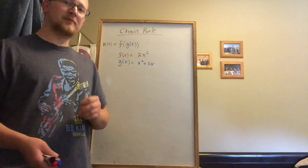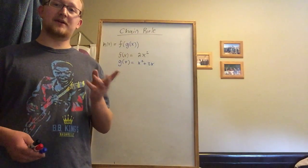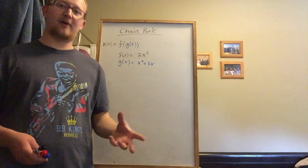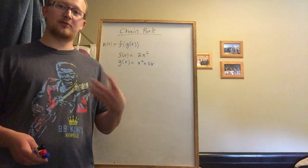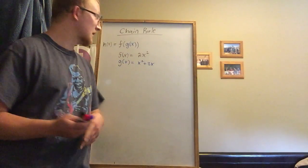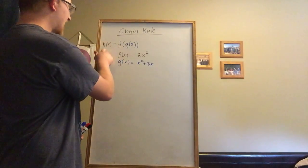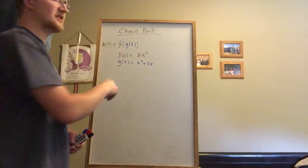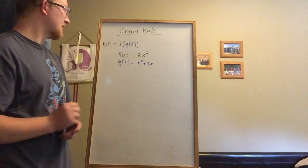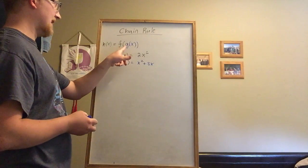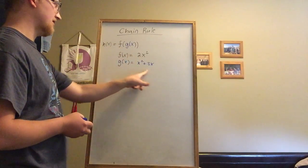the chain rule. The chain rule tells us how to deal with a function within a function if we want to take the derivative. In this case, I'm writing my overall function as h(x) = f(g(x)). Wherever there's an x in f, I plug in g(x).